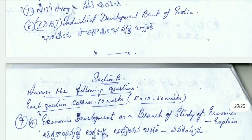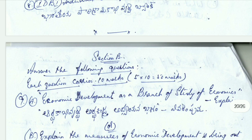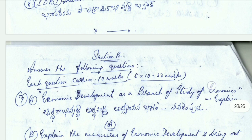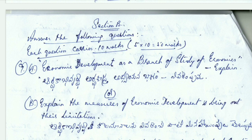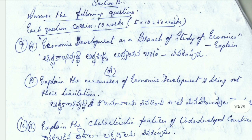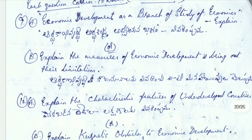Essay question: assess economic development as a branch of study of economics, explain. B: explain the measures of economic development and bring out their limitations. 10th Aayug: explain the characteristics and features of underdeveloped countries.